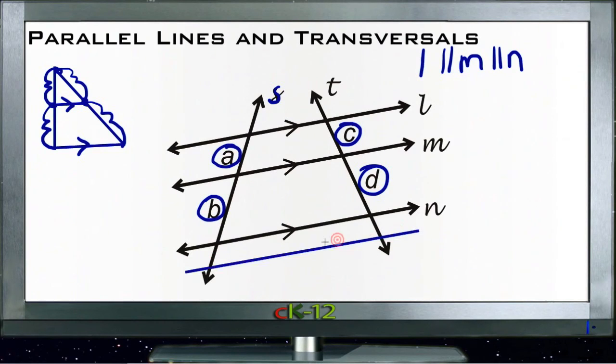If we even put in another line across here, as long as it was still parallel to these others, mark it as parallel there, then we could put in another letter, call this E and this F.